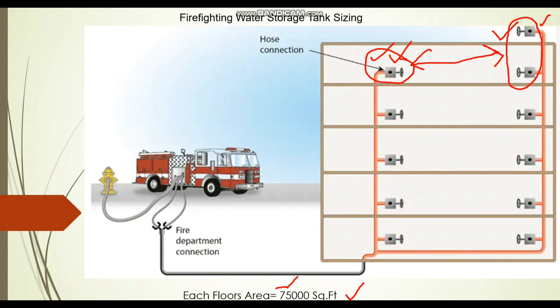In the same project, if the floor area is instead 82,000 square feet, there is no change for the last remote riser — still 500 GPM. But for the next standpipe, since the area exceeds 80,000 square feet, we must consider two landing valves instead of one. In that case the fire pump flow would be 1000 GPM.